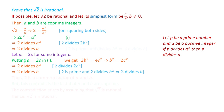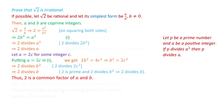Now we have these two conditions: 2 divides a, and 2 divides b. So 2 is a common factor of a and b. But we have assumed that a and b are co-prime integers. This is a contradiction — we assumed a and b are co-prime, but we have obtained that they have a common factor 2. This means the assumption that root 2 is rational is not possible.